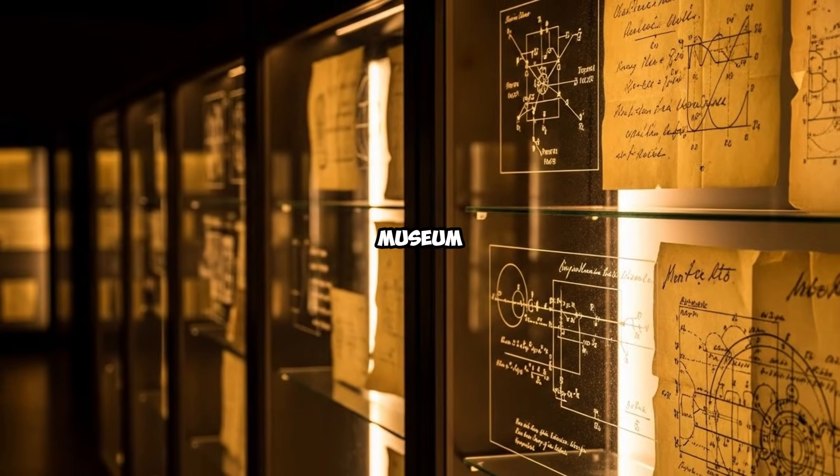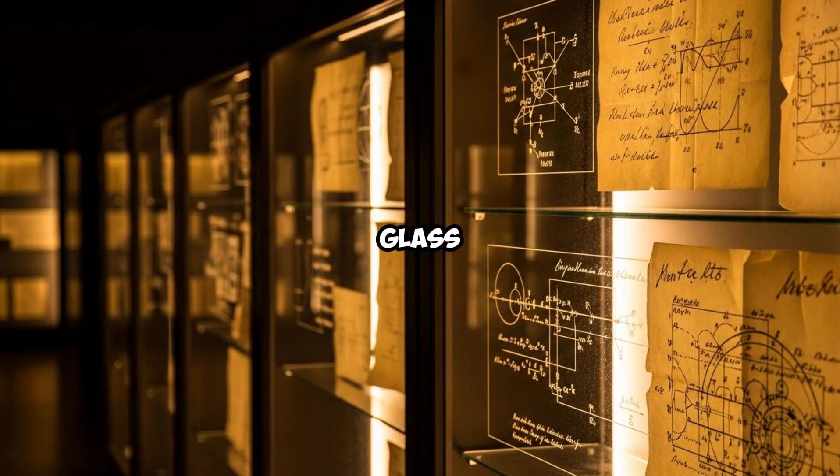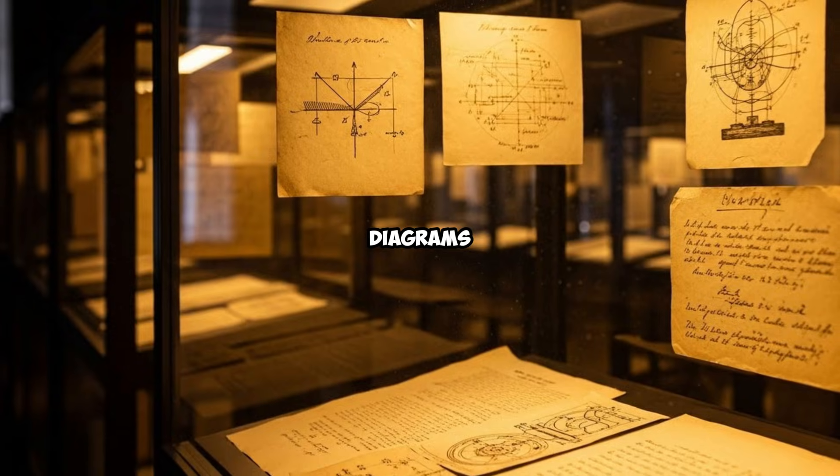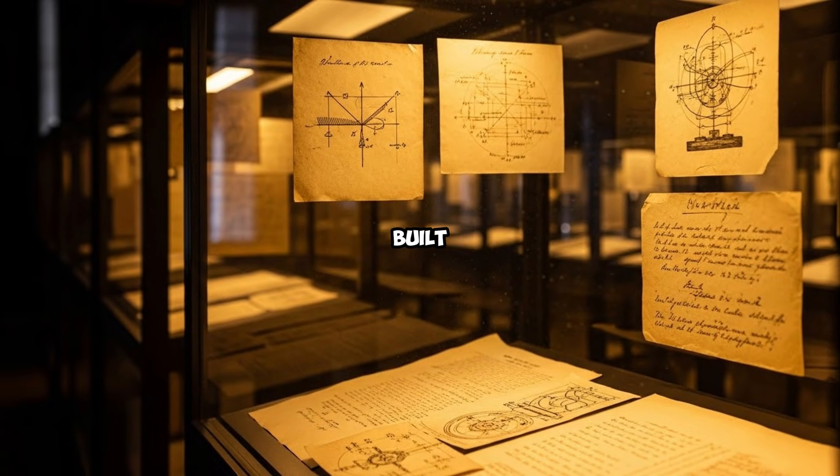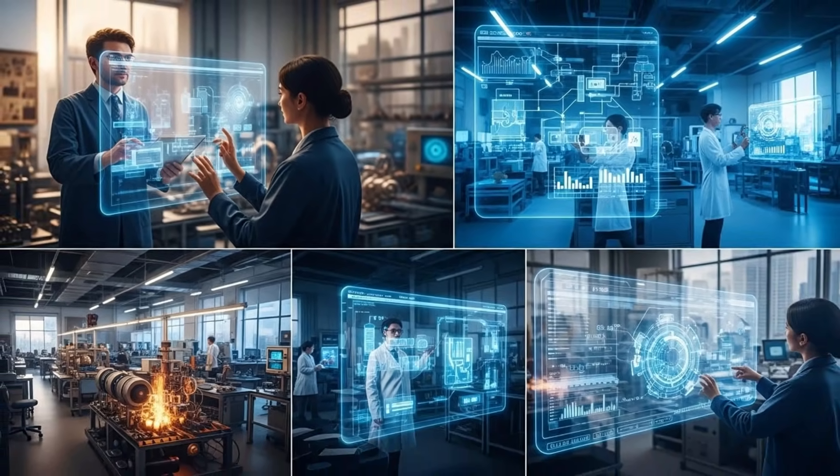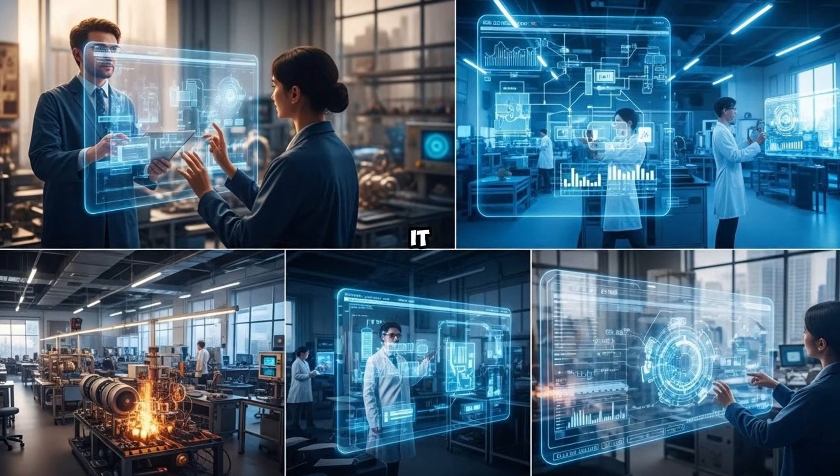There's a room at the Nikola Tesla Museum in Belgrade. Inside it, behind climate-controlled glass, sit thousands of handwritten pages. Diagrams, equations, sketches of machines that were never built. Most of them are over a century old, fading ink on brittle paper, the remnants of a mind that saw the world not as it was, but as it could be.